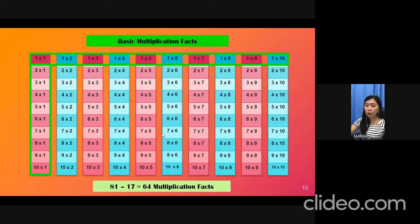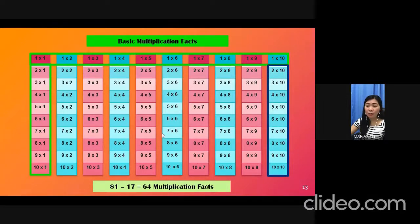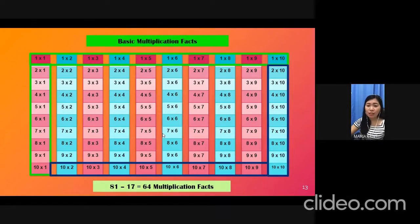For the last example, 5 times 10. 5 times 1 is equal to 5, and then add 1, 0 on the end. That's 50. So, 5 times 10 is equal to 50. Now, you know 2 times 10, 3 times 10, 4 times 10, and so on. That means you also know the reverse: 10 times 2, 10 times 3, 10 times 4, 10 times 5, and so on. Now, from the two simple rules, you learned 36 multiplication facts.